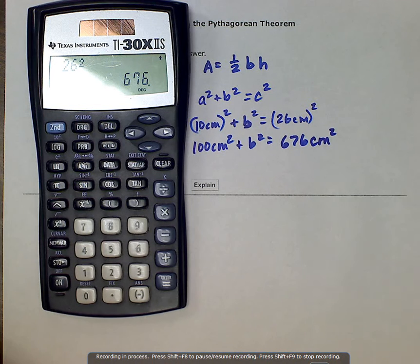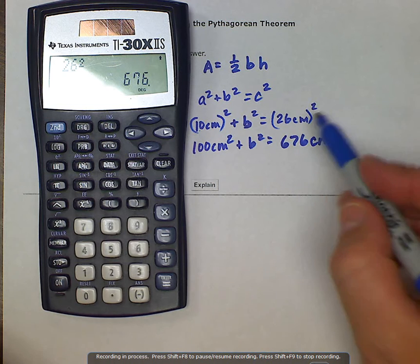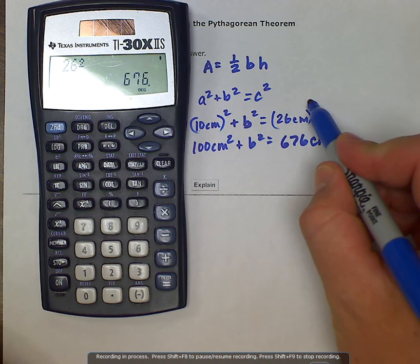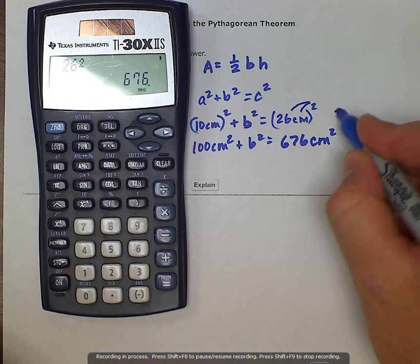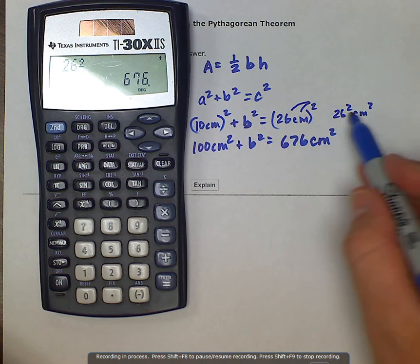And the reason it gets squared is because of rules working with exponents, right? When we have a power-to-power rule, this power gets distributed to both things. So it becomes 26 squared centimeters squared, and that's why our units get squared.